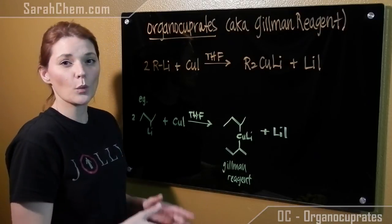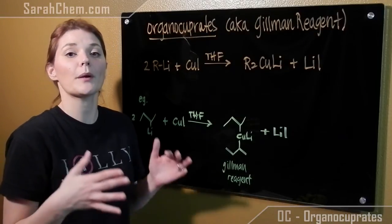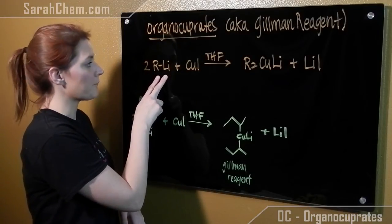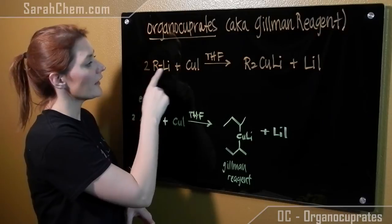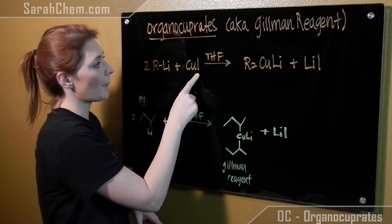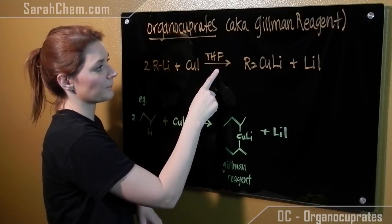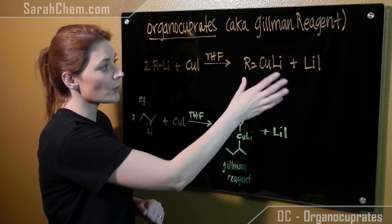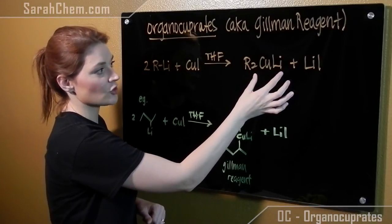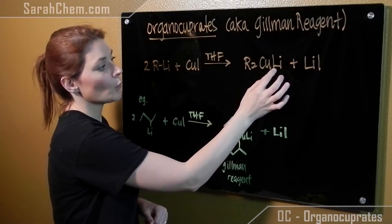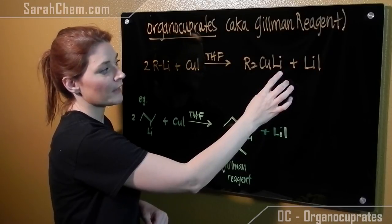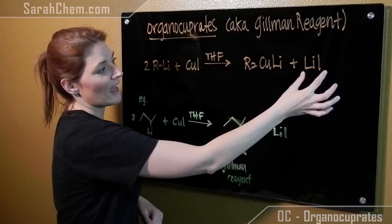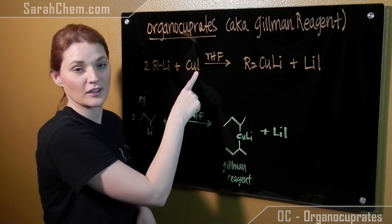In this particular video, we're just going to look at the preparation of the Gilman reagent. What we start out with is an organolithium, and we're going to take two equivalents of that and react with copper iodide in a THF solvent. Out of this, we'll get the Gilman reagent. Notice that there are two R groups now attached to that copper, which is also attached to that lithium. And the second lithium attaches to the iodide from the copper iodide originally.